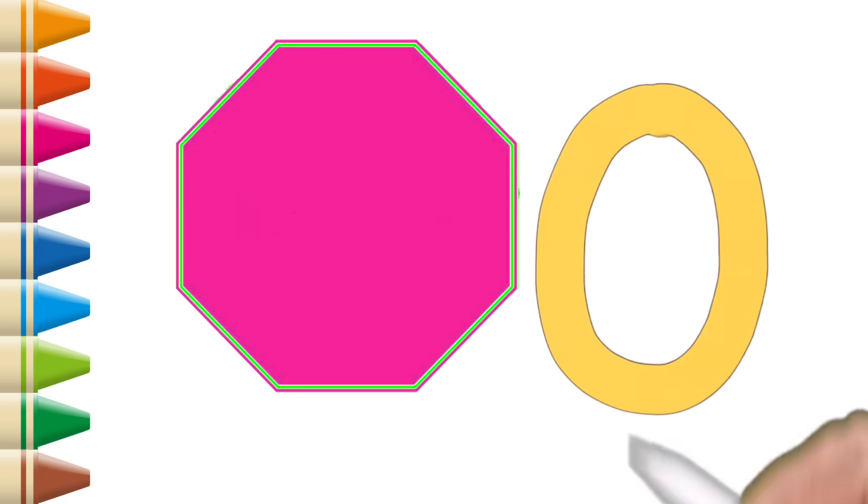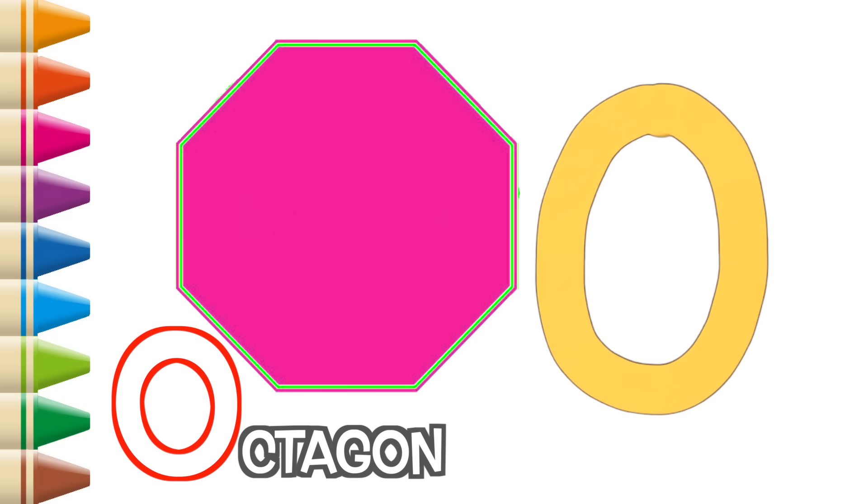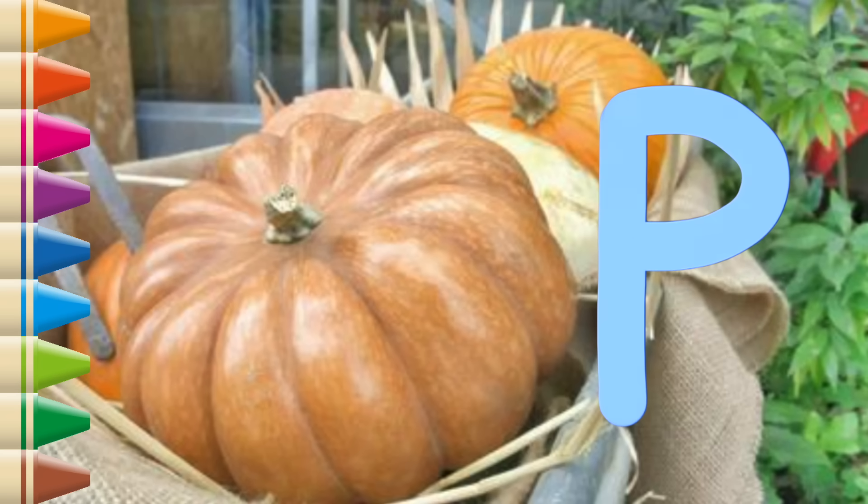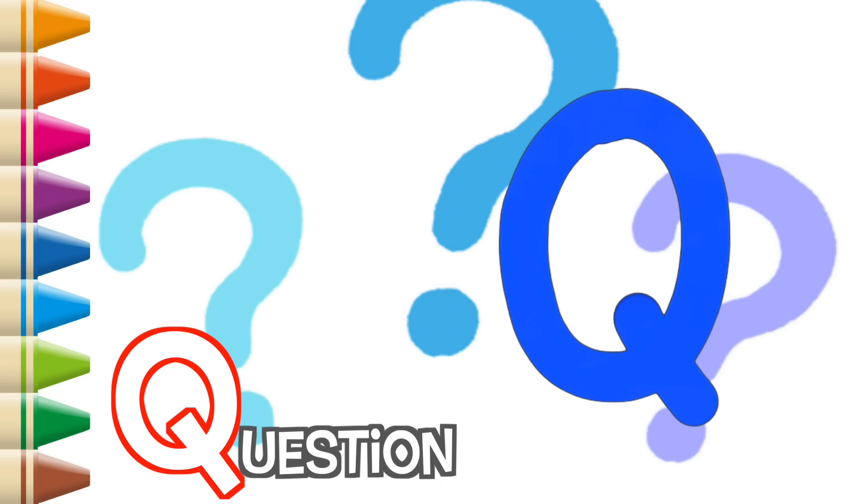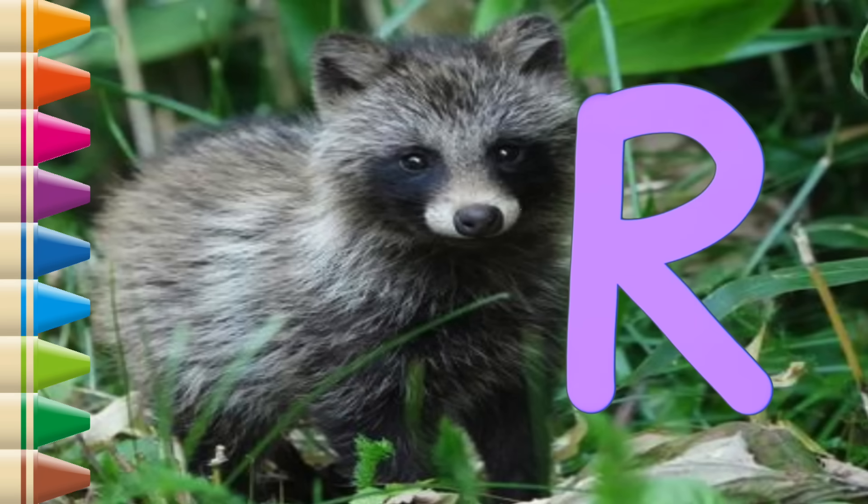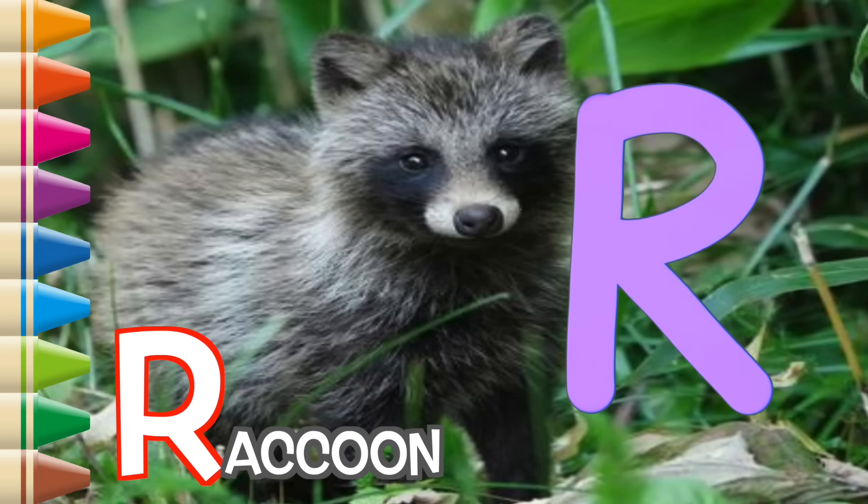O, O, O is for Octagon. P, P, P is for Pumpkin. Q, Q, Q, Q, Q is for Question. R, R, R is for Raccoons.